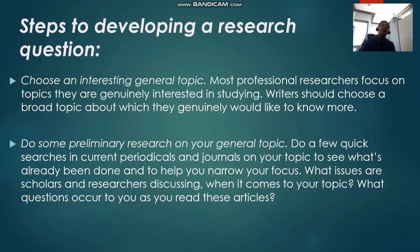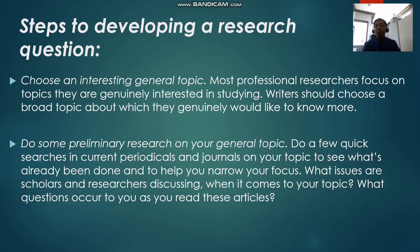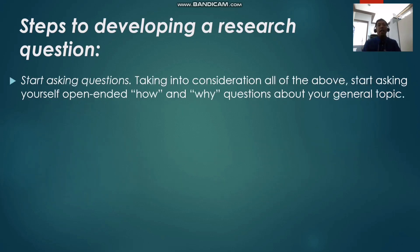You should ask a question about an issue that you are genuinely curious and passionate about. Now, here are the steps to develop a research question. First, you need to choose an interesting general topic — most professional researchers focus on topics they are genuinely interested in studying. Next, do some preliminary research on your general topic — do a few quick searches in current periodicals and journals to see what's already been done and to help you narrow your focus. Then, start asking yourself open-ended how and why questions about your general topic.